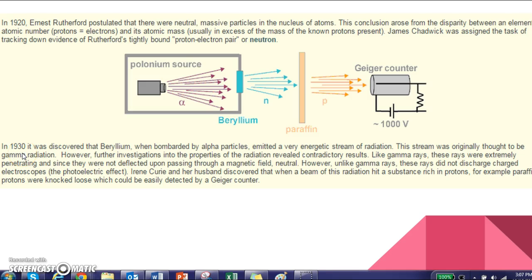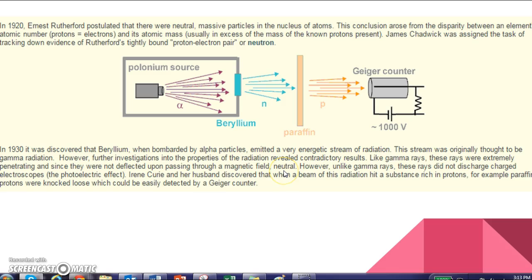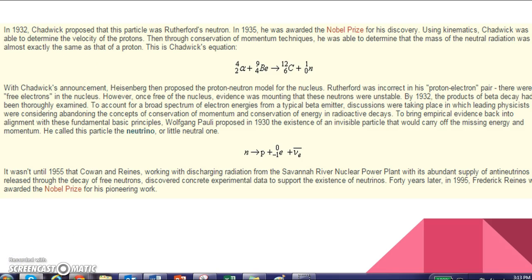You do not have to write any of this down. In the 30s, they discovered that beryllium, when they bombarded with alpha particles, they shot all these positives at it, that they had radiation. And at first they thought it was gamma. Gamma is a type of radiation, a type of electromagnetic wave. Like there's microwaves, infrared rays, ultraviolet rays. Gamma is another type of ray or wave. But they realized that something else was going on, and in fact that it was neutral.